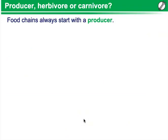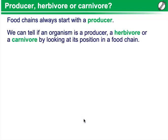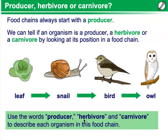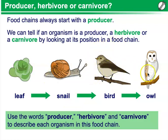Food chains always start with a producer. We can tell if an organism is a producer, an herbivore, or a carnivore by looking at its position in a food chain. The leaf of the lettuce is a producer. The snail is going to consume the lettuce, so therefore it is an herbivore. Then we've got a couple of different carnivores — the bird that's going to eat the snail, and the owl that's going to eat the bird. So there are multiple carnivores in this particular food chain.